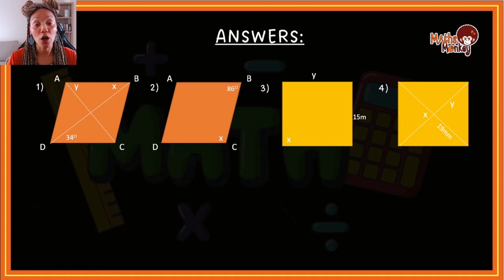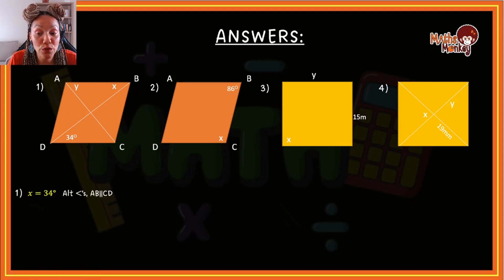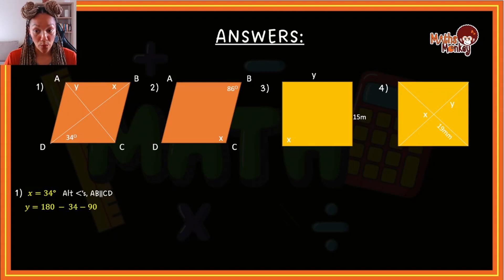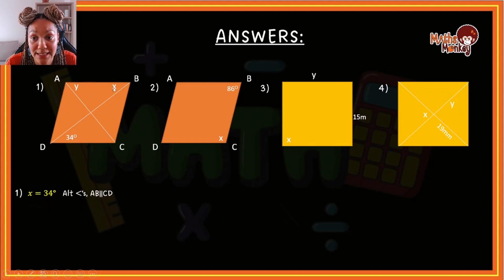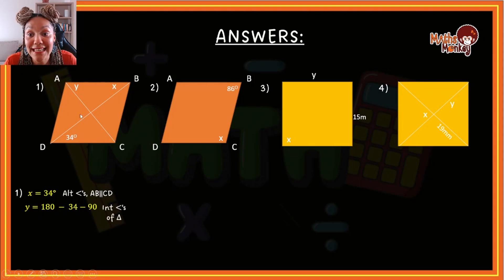Now let's look at the answers — hopefully you feel confident about what you've answered. Remember, you always have to give a reason. So for question one: x equals 34 because of the Z shape — alternate angles — and you have to give the parallel lines, which is AB parallel to CD. For y, if you look at the triangle formed, you have 34 and 90 degrees — because this is a rhombus and diagonals bisect at 90. So to find y: 180 minus 34 minus 90. Reason: interior angles of a triangle. So y equals 56.